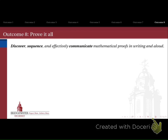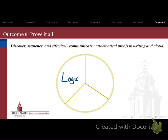Finally, outcome number 8 is to help you develop into better writers of mathematical proof. We want to look at how to discover, sequence, and effectively communicate mathematical proof — both in writing and out loud. This is going to come in three different main areas, and each time I score one of your proofs I'm going to score it in each of these three dimensions: we'd like for your proofs to be logical, precise, and well-written or well-spoken.